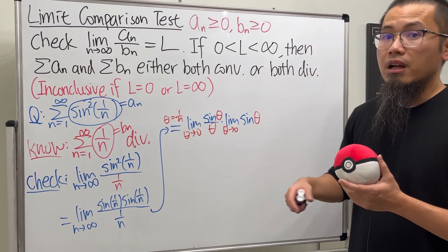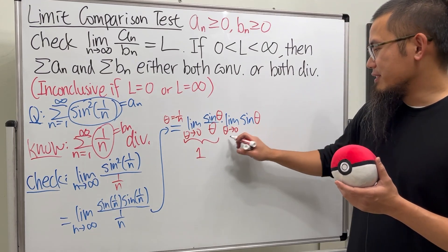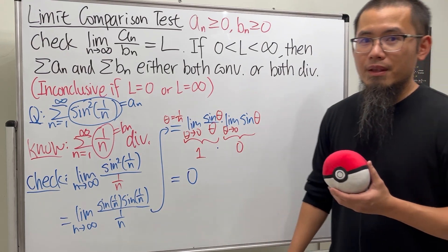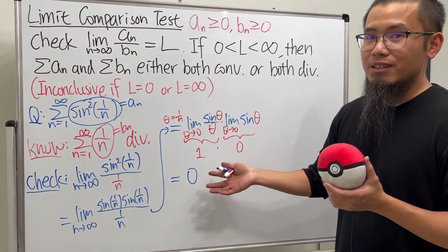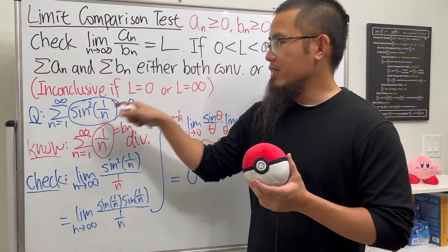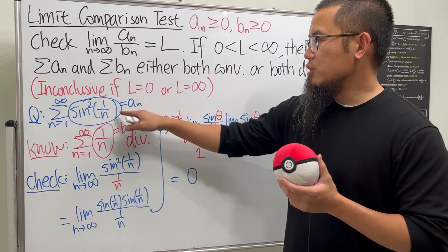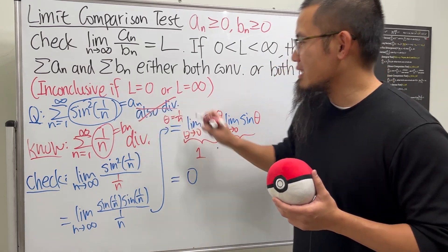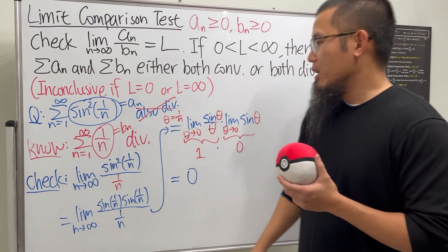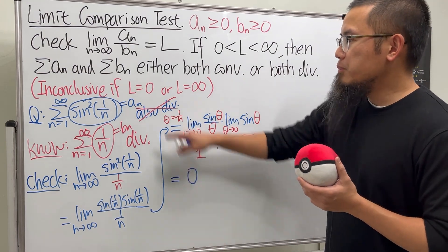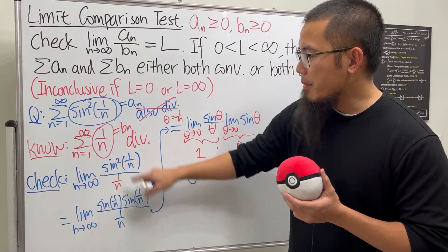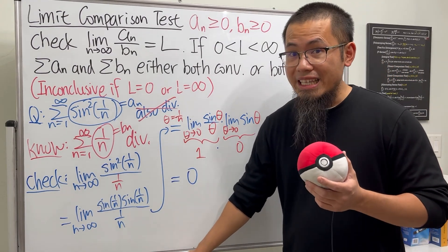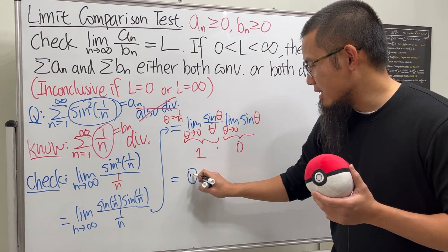This is valid because the limit of a product is the product of the limits, provided both limits exist. The first limit, sin(θ)/θ as θ→0, is famously equal to one. The second limit, sin(θ) as θ→0, equals zero. So one times zero gives us zero. We might be tempted to conclude that since the harmonic series diverges, this series also diverges — but that conclusion is incorrect. In fact, this series actually converges. We drew the wrong conclusion because L turned out to be zero.